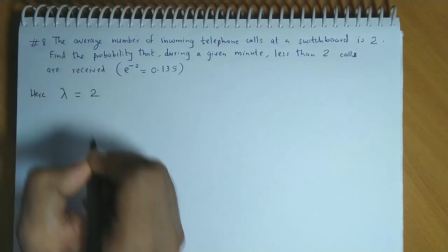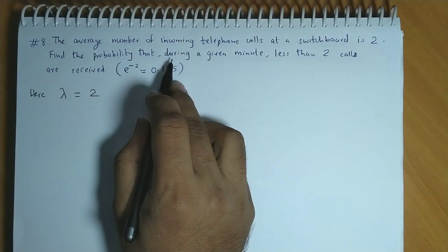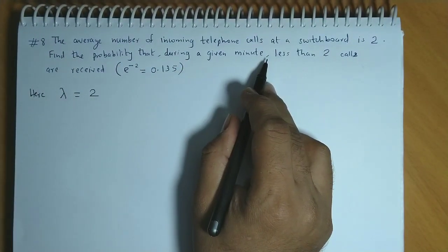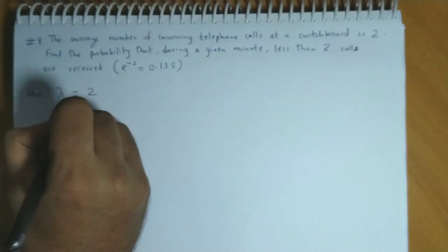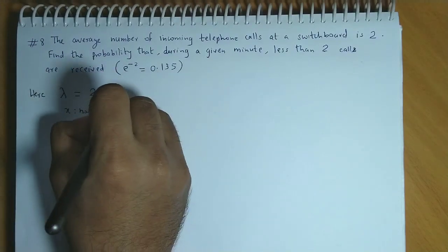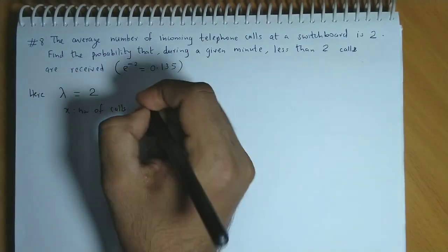So lambda is equal to 2. You have to find that during a given minute, less than 2 calls. So suppose x is the number of calls.